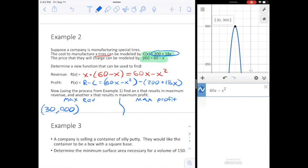If my vertex is at 30, 900, 30 is the x, which means that's how many tires I need to sell, and if I sell that many tires I will get a maximum revenue of $900.